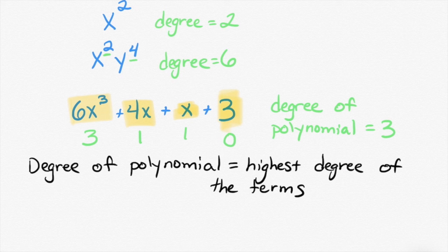The degree of the polynomial is the highest degree of the terms. I assume there's a more mathematical way to write that, but you get the idea. You find the degree of each term, and the biggest number is the degree of the whole polynomial.